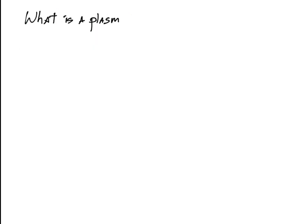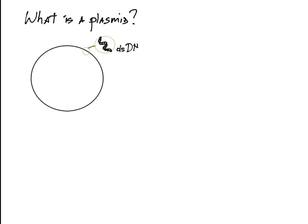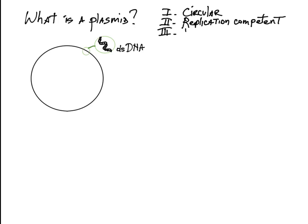What is a plasmid? A plasmid is typically a circular loop of double-stranded DNA that is capable of independent replication and persists through cell divisions of the host cell.